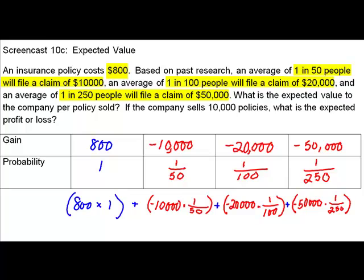When you are actually computing expected value, rather than figuring the individual probabilities and ending up rounding, it really is better off if you enter the entire expression into your calculator at once. In other words, open your parenthesis, enter in the 800 times 1, or obviously 800 times 1 is 800, so just enter 800. Close the parenthesis, plus, open the parenthesis, negative, make sure you use a negative not a minus, 10,000 times 1 divided by 50. Close the parenthesis, plus, open the parenthesis, negative, 20,000 times 1 divided by 100.